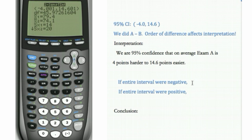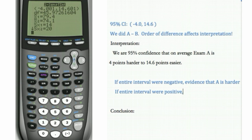So if the entire interval is negative, we have evidence that A is harder. If the entire interval is positive, we have evidence that B is harder.